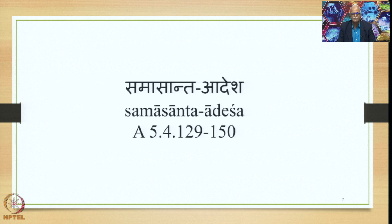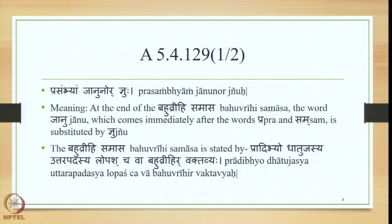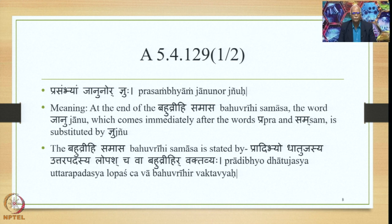Samasaanta Adeshas are stated from 5.4.129 up to 5.4.150. Let us study them one by one. The first is stated by Sutra 5.4.129, which is Prasambhyam Janunor Gniho. At the end of the Bahuvrihi Samasa, the word Janu which comes immediately after Pra and Sam is substituted by Gniho, stated by Nyu.